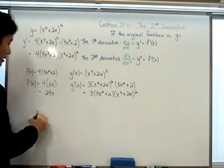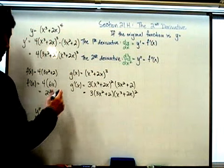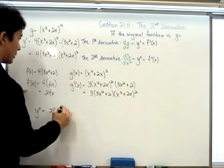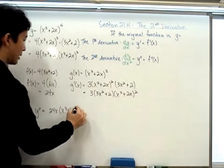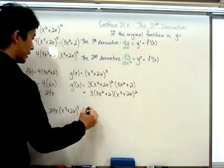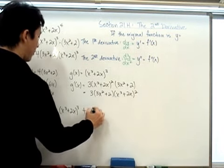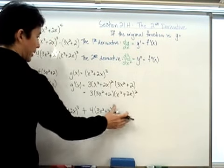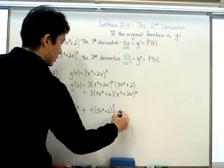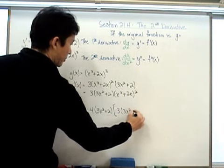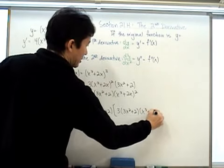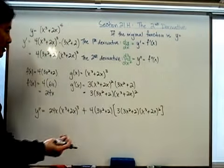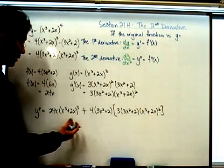So the second derivative y'' is f'(x) times g(x) plus f(x) times g'(x). That is 24x times x to the 3rd plus 2x quantity to the 3rd, plus 4 times 3x squared plus 2 times 3 times 3x squared plus 2 times x to the 3rd plus 2x quantity squared. Now we want to simplify this to see if we can factor things out.